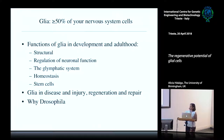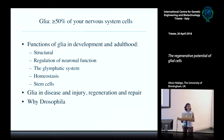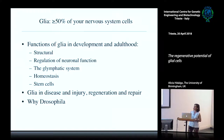So let's get on with it. Glia are a big number of cells in the brain. How many of them changes all the time, but the conclusion is a lot of them. In humans, at least half of the cells of your brain are glial cells.